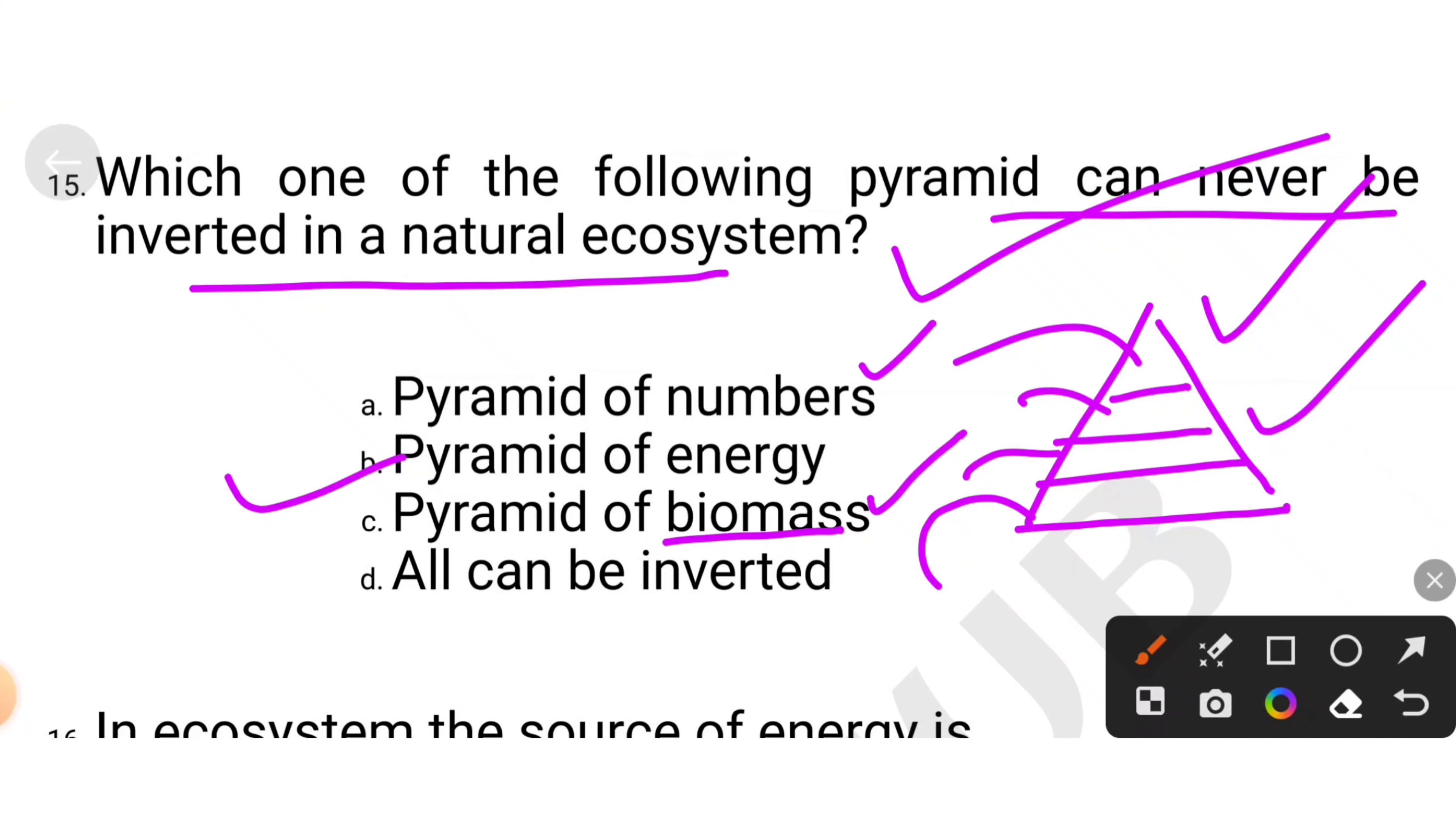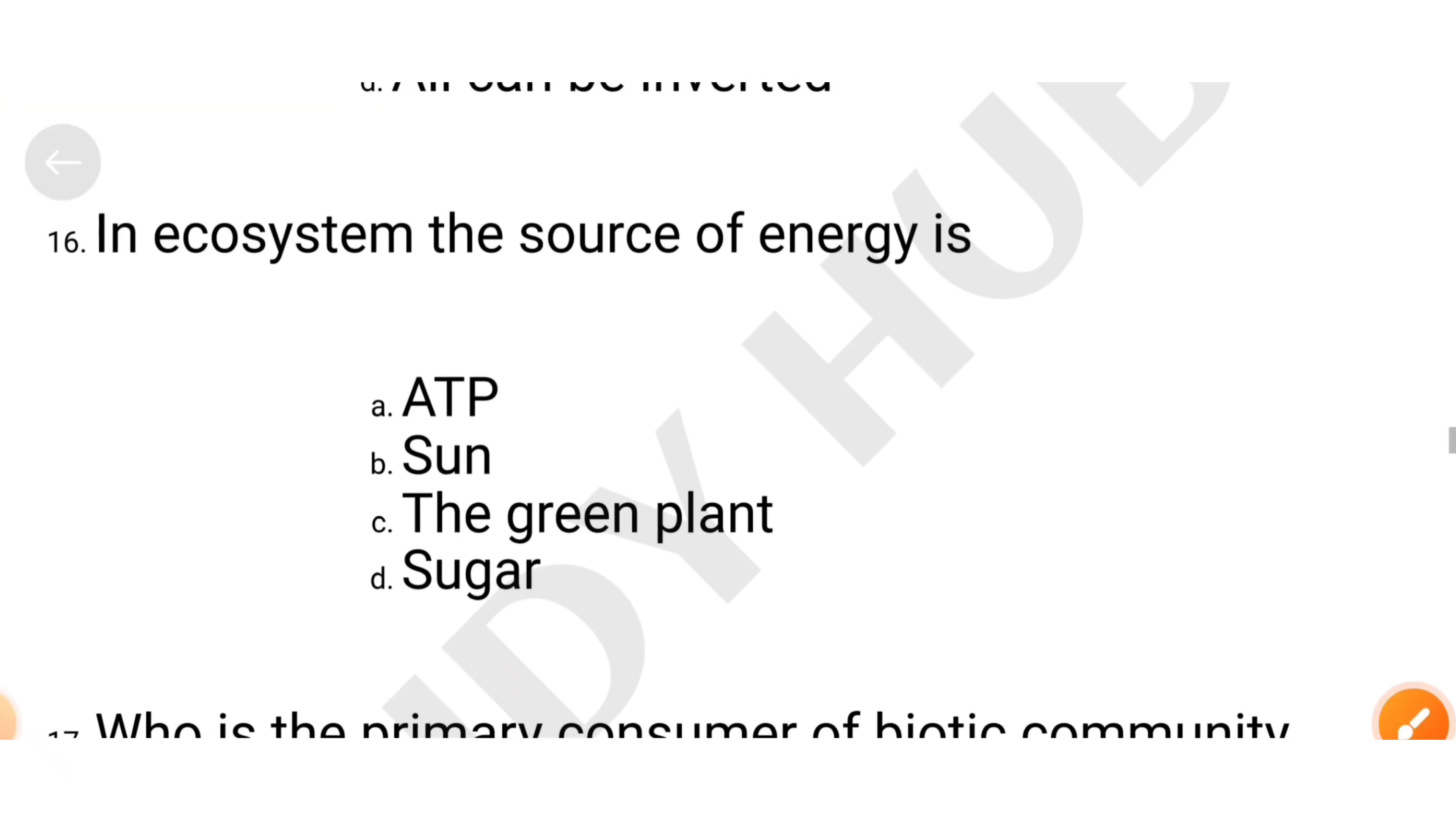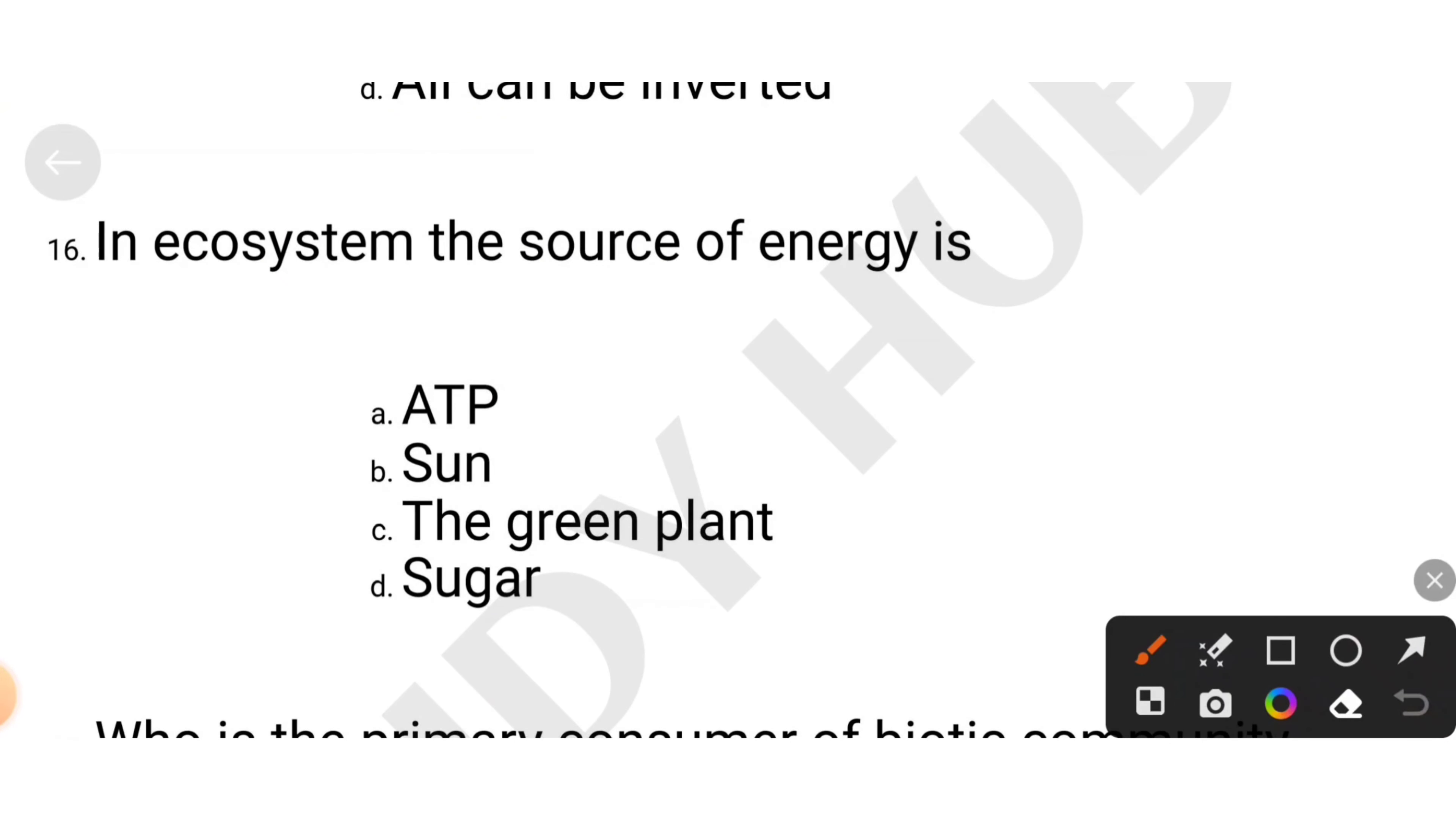In an ecosystem, the source of energy is ATP, sun, green plants, or sugar. Source of energy, what is the source of energy? Green plants, ATP, sun. Sun is the source of energy in the ecosystem.